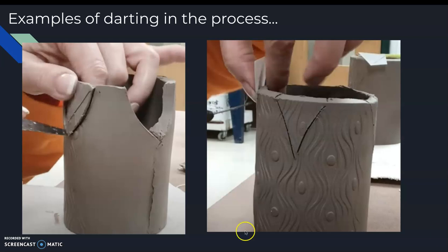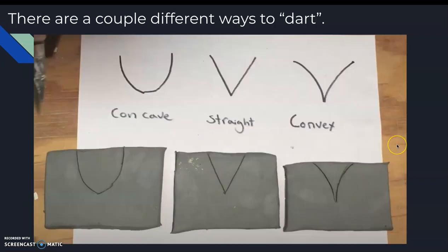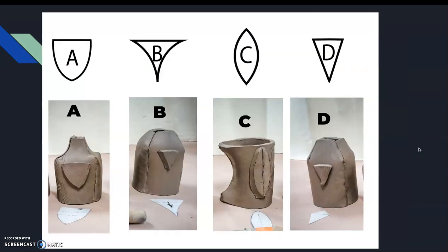Two more examples here of the darting process. The outline of what you cut could be more pointed or more bowing outward — these two examples. There are a couple of different ways to dart and you get to choose. However, once you cut, you really can't put the clay back on, so you have to decide which way you're going to dart your clay. This is concave, this is straight, and this is convex.